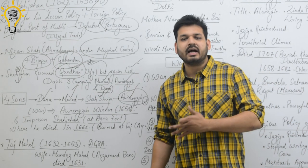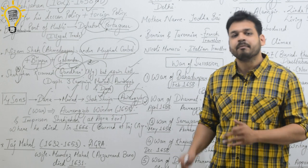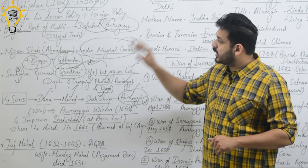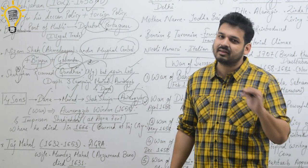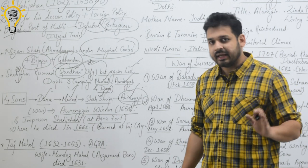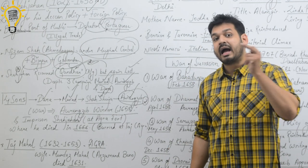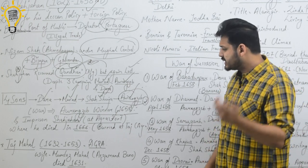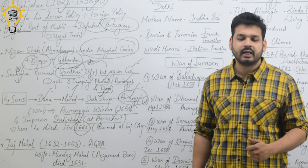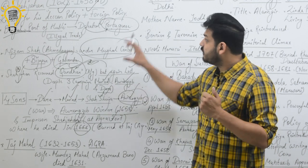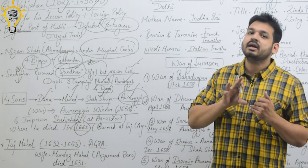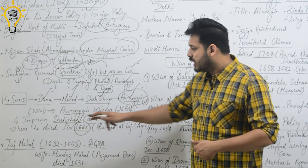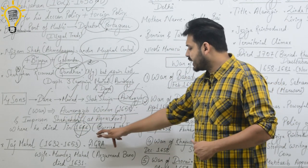When Aurangzeb became emperor, Shah Jahan did not die immediately. He was imprisoned by Aurangzeb at Agra Fort. In 1666 AD, Shah Jahan died. Aurangzeb imprisoned Shah Jahan at Agra Fort where he died in 1666 AD.